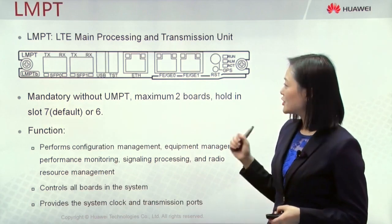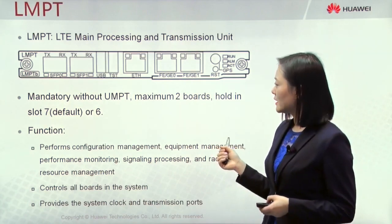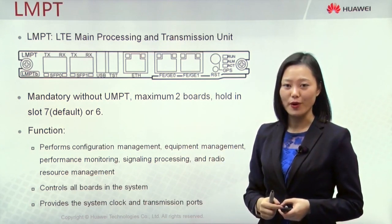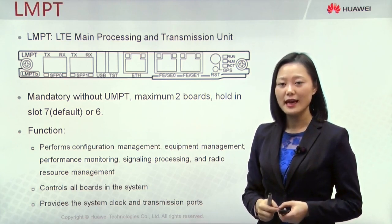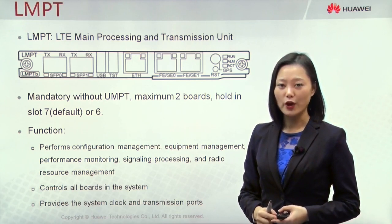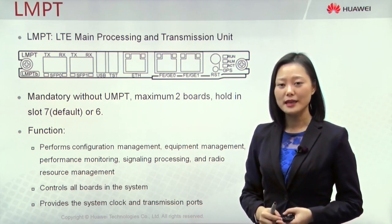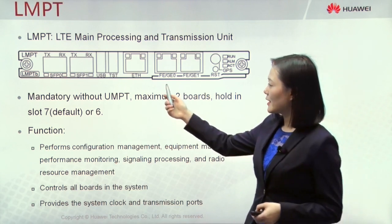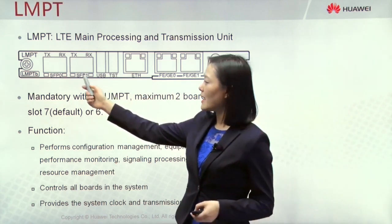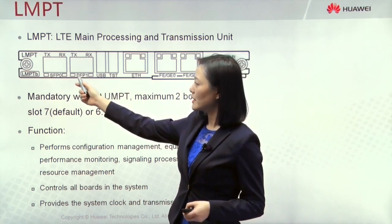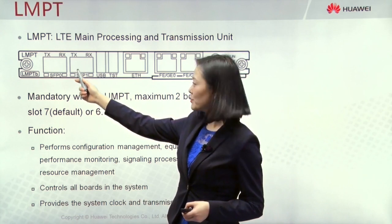Now let's check each board's interfaces and functions in detail. First is the MPT board — the Main Processing and Transmission board. It has two types: LMPT for LTE mode only, and UMPT which is universal and can support multi-mode. For the LMPT board, from the front panel we can see from left to right: there are two FEGE electrical ports to provide transmission.